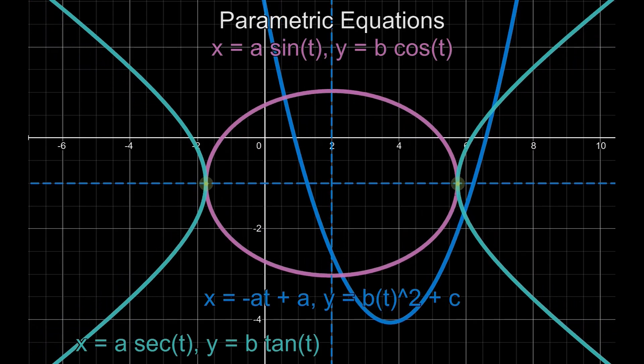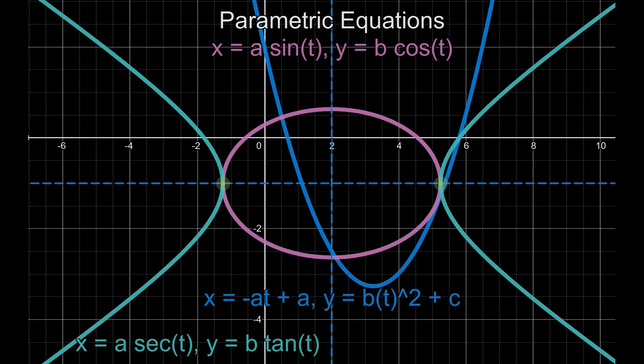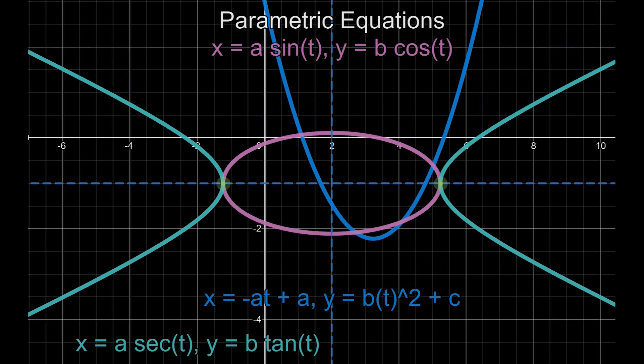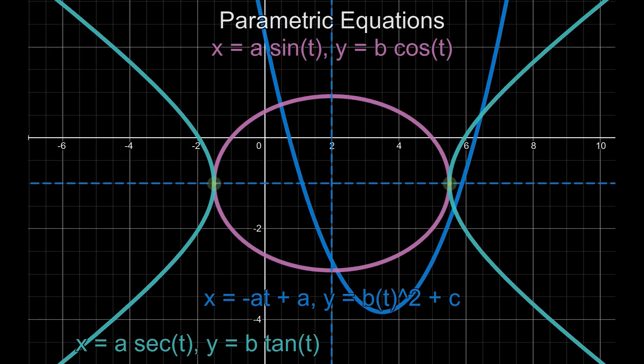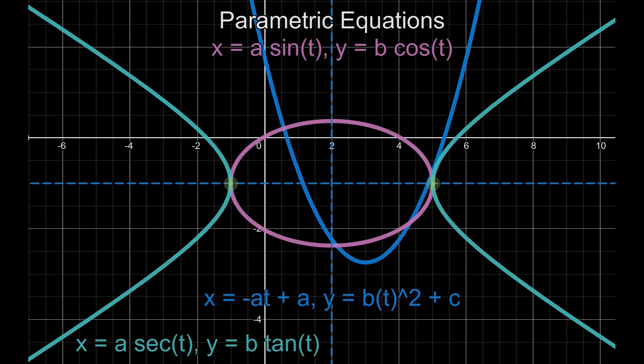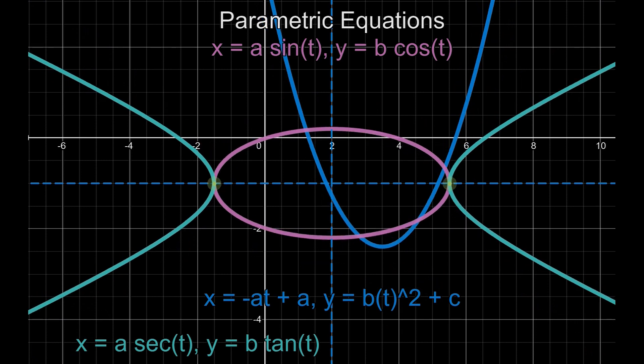So basically in today's class, we went over the different types of parametric equations and the different shapes and graphs that they create. We also learned how to convert them into different forms using trigonometric identities. Parametric equations are written in an independent variable — the parameter.